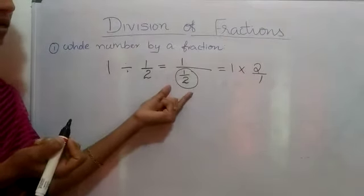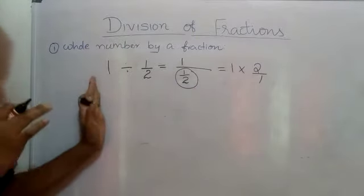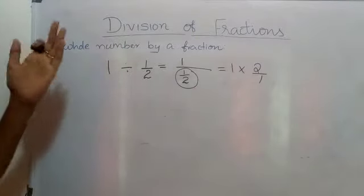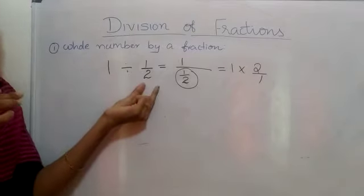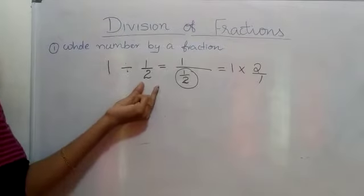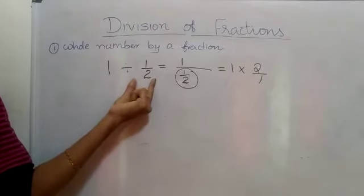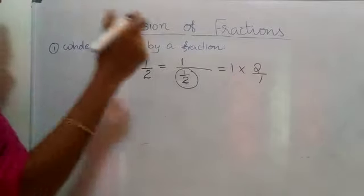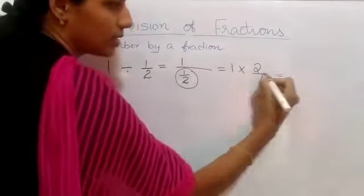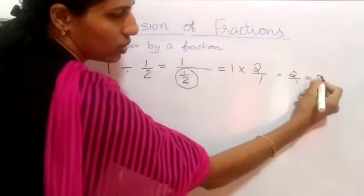The reciprocal — that is clear? When you are getting a question like a whole number divided by a fraction, you have to multiply the whole number with the reciprocal of the fraction. After that it is easy: one into two is two-by-one, which equals two. This is the step.